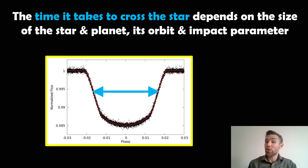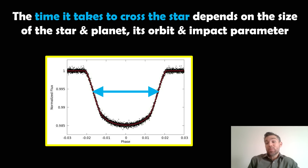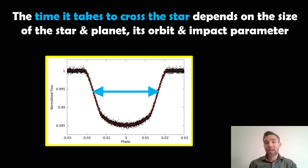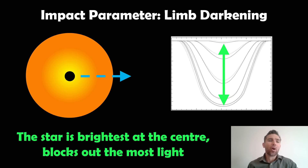Or if we don't know those other properties, we can calculate them from the time it takes to go across. The transit duration is dependent on the size of the star, the planet, its orbit, and also the impact parameter. I've done extra videos on the impact parameter and the orbit, but here's a recap on the impact parameter so you're aware of what it might be.